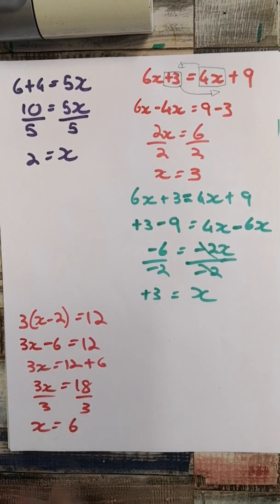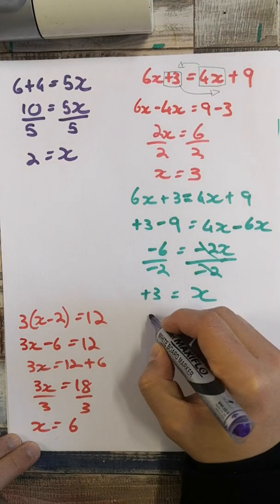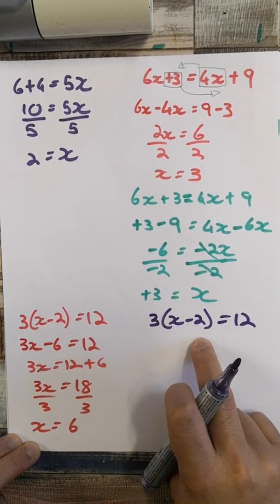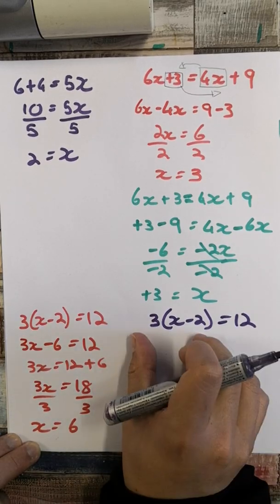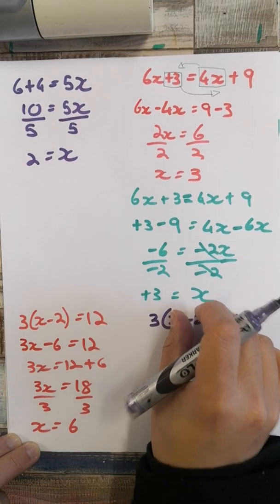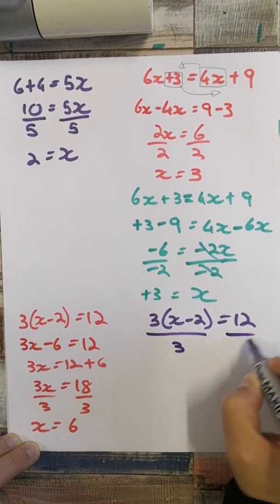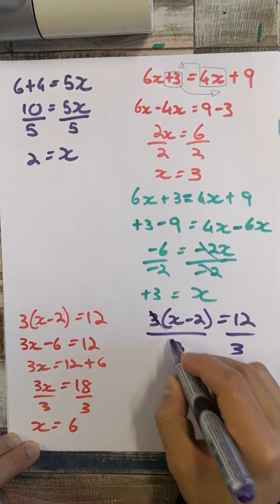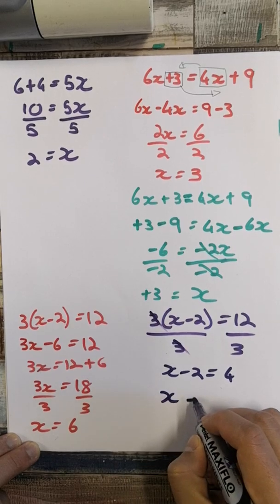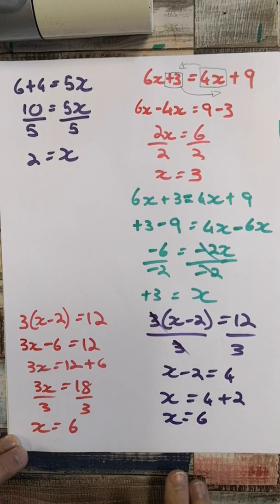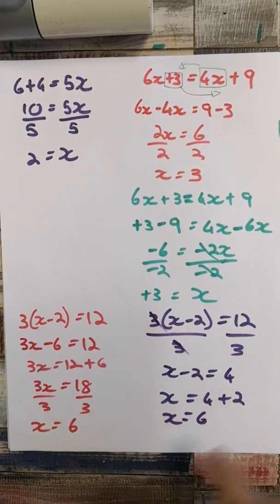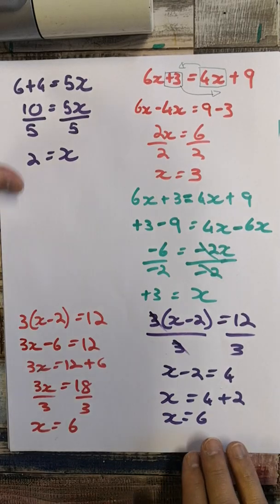I want to show you another way with the same equation: 3(x minus 2) equals 12. Since 3 is the coefficient, I can just divide both sides by 3. That cancels out, leaving x minus 2 equals 4. Then taking the negative 2 over gives x equals 4 plus 2, therefore x equals 6. Both methods give the same answer — you're welcome to use either.